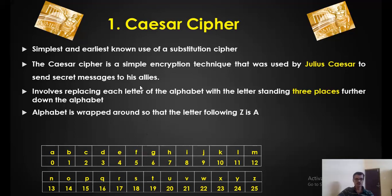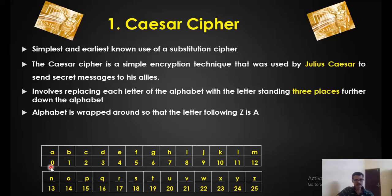Now suppose Julius Caesar wanted to send a particular text to neighboring countries. What he used to do is replace or substitute every alphabet with some other alphabet — specifically, he would replace a particular alphabet with the corresponding alphabet that comes three places after it. That means for a particular number you just add 3. Suppose he wants to send A: add 3 to 0, that equals 3. So A is replaced by D in the ciphertext. B is replaced by E because 1 plus 3 is 4, and the fourth alphabet is E.